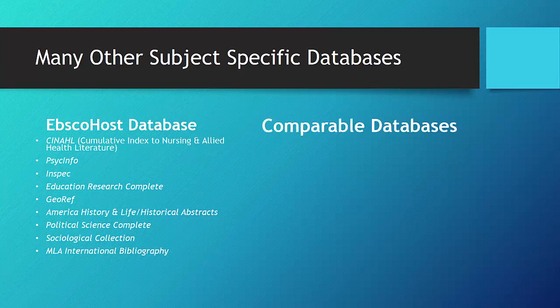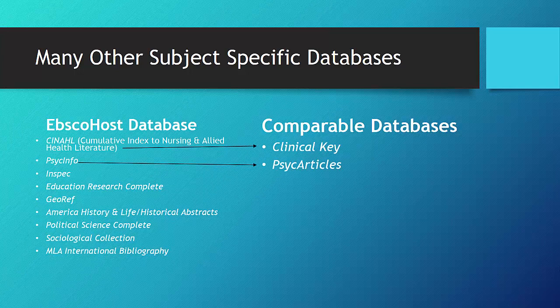For example, CINAHL is from EBSCOhost and ClinicalKey is a nursing database from a company called Elsevier. PsycInfo is an EBSCOhost database for psychology research, and PsycArticles is a full-text psychology database sanctioned by the American Psychological Association. IEEE Explorer is from the Institute of Electrical and Electronics Engineers, and InSpec is an EBSCOhost database for research in electricity and electronics.